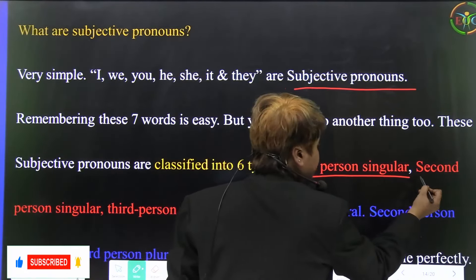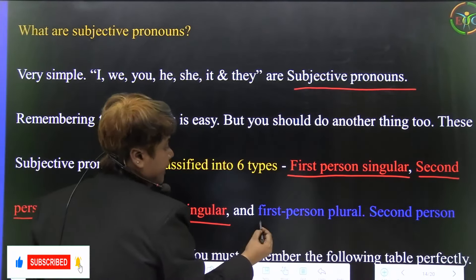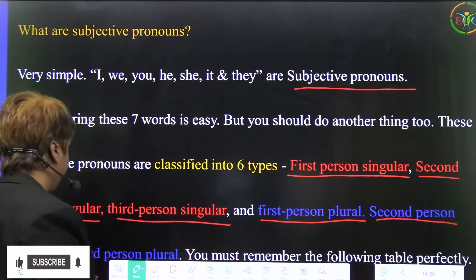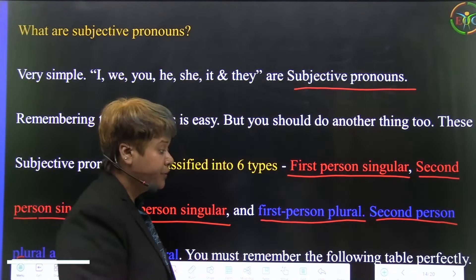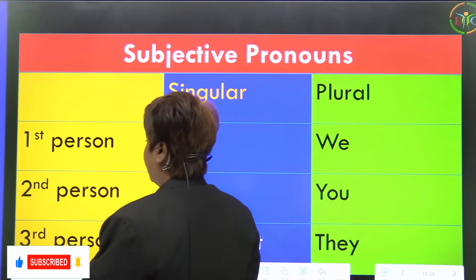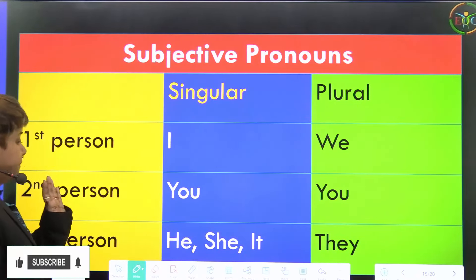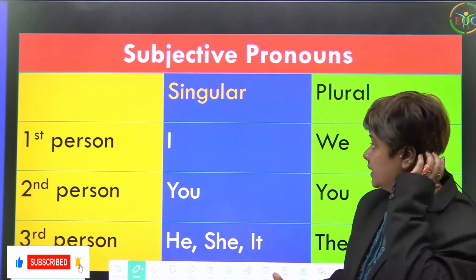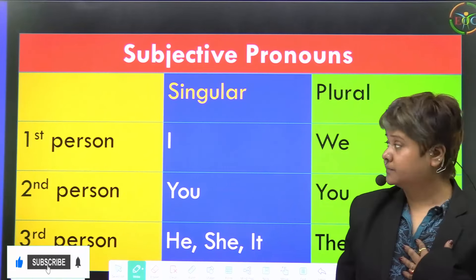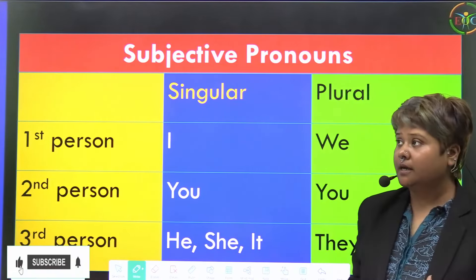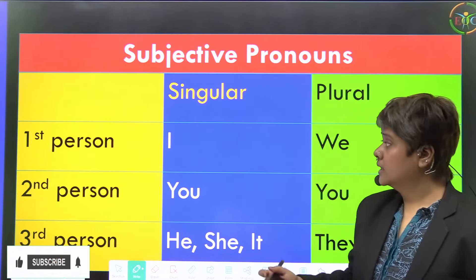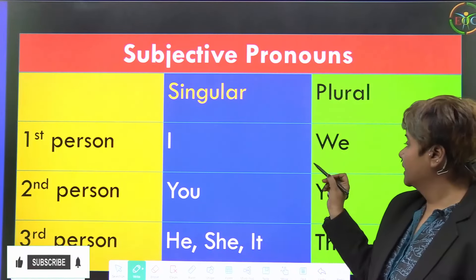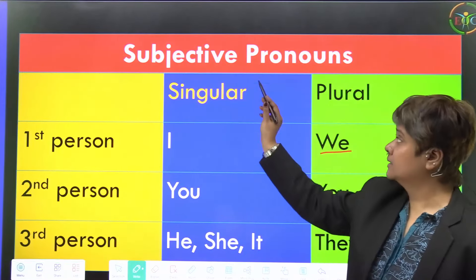The six types are: first person singular, second person singular, third person singular, first person plural, second person plural, and third person plural. You must remember this table perfectly. For example, 'I love to eat sweets' — here 'I' is a singular first person subject pronoun. 'We love to eat sweets' — 'we' is the plural form of first person subjective pronoun.